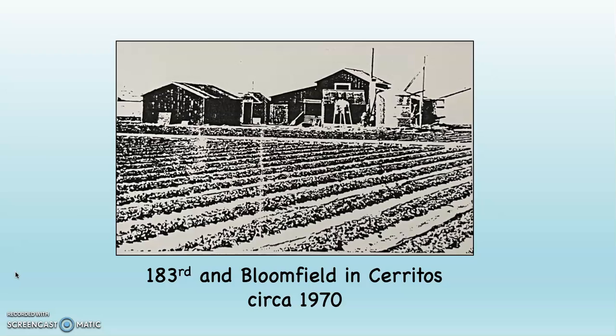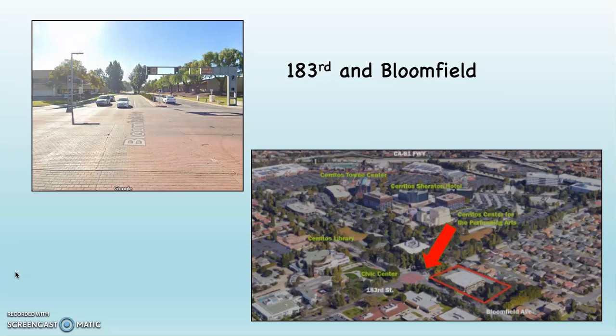Here's Cerritos around 1970 at the corner of 183rd and Bloomfield, before there was the Cerritos that exists today. Here is the same corner now. What happened to those dairies that were in Cerritos, Artesia, and La Palma? The dairies moved out to Corona, San Bernardino, Bakersfield, and Tulare. Now in Corona, there's increasing pressure to sell the dairies because the land is more valuable due to urban sprawl, and local residents don't like the smell and flies associated with dairies.